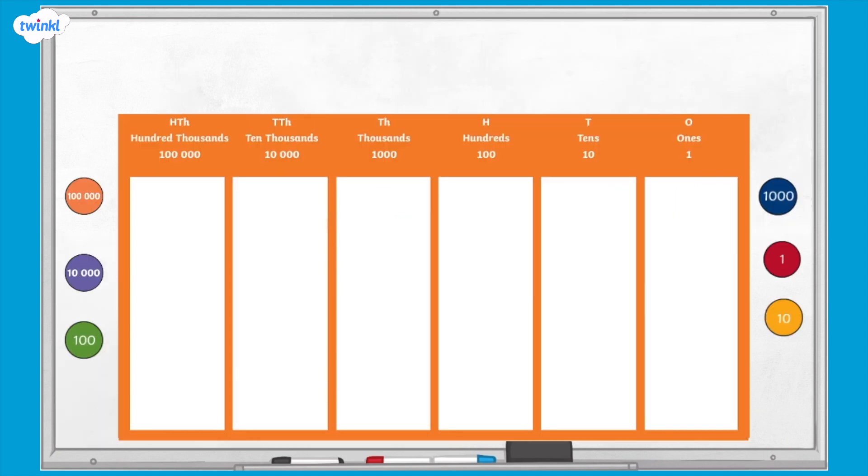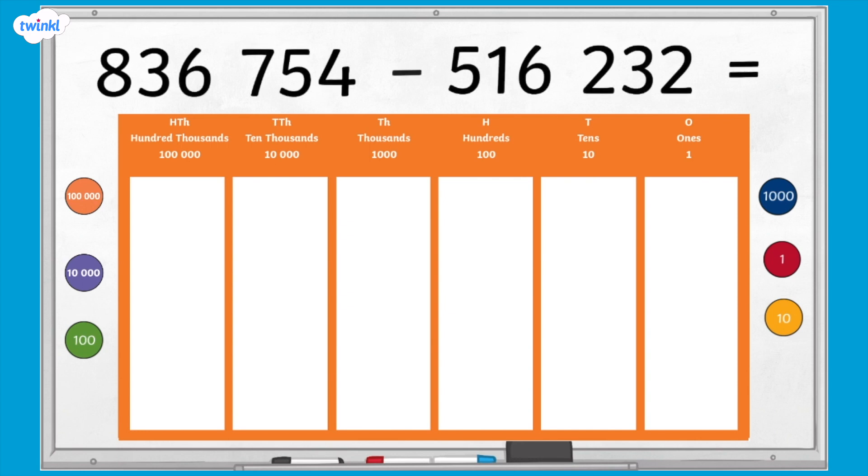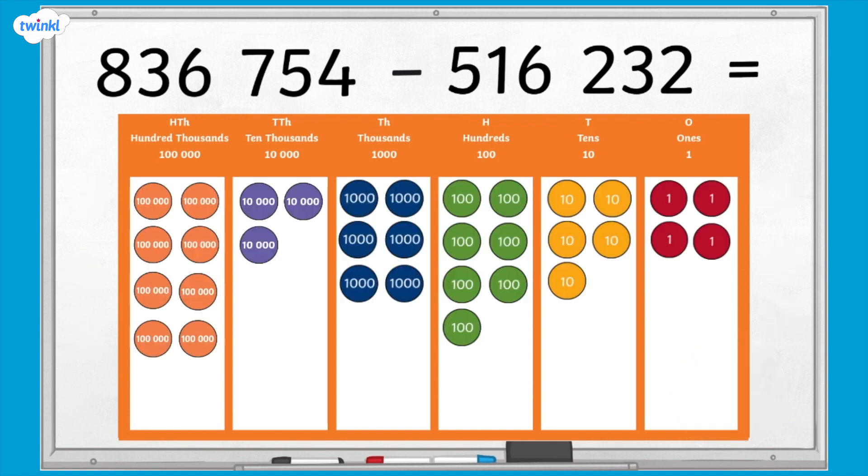Now I have a calculation: 836,754 subtract 516,232. I'd like you to create 836,754 using place value counters and complete the column subtraction in this empty template.